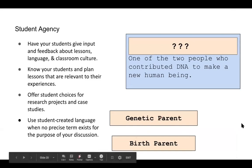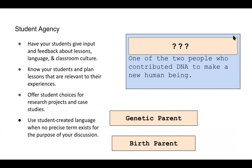The last aspect of the framework, and one of my favorites, is thinking about student agency. Within the student agency framework, it's important to remember that each group of students has specific needs and particular things co-created in your classroom culture. This is not a one-size-fits-all curriculum — it's something you have to work on as a community. It's important to know your students, plan lessons relevant to their experiences, offer students choices for research projects and case studies, and to use student-created language when no precise term exists for the purpose of your discussion.